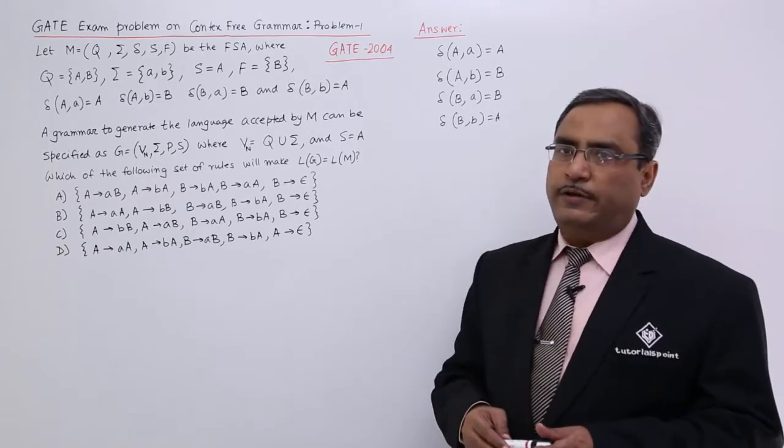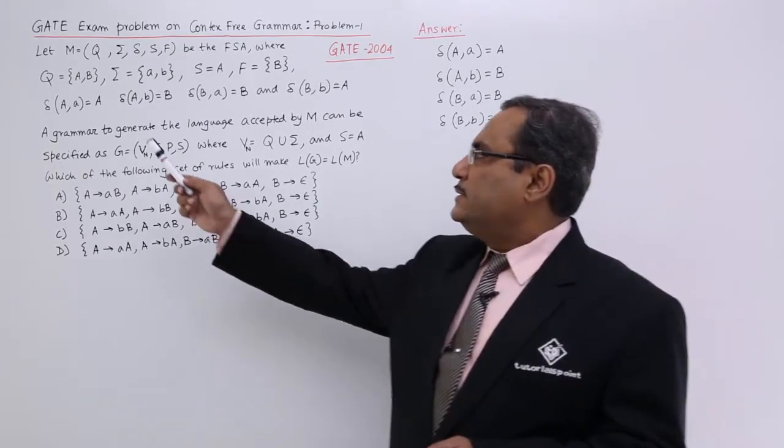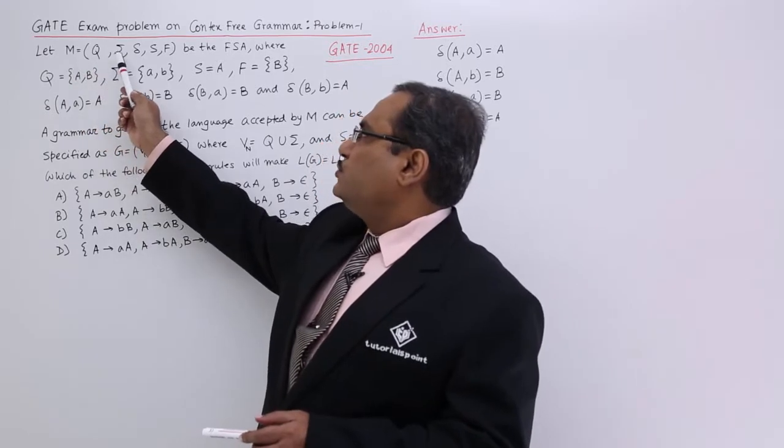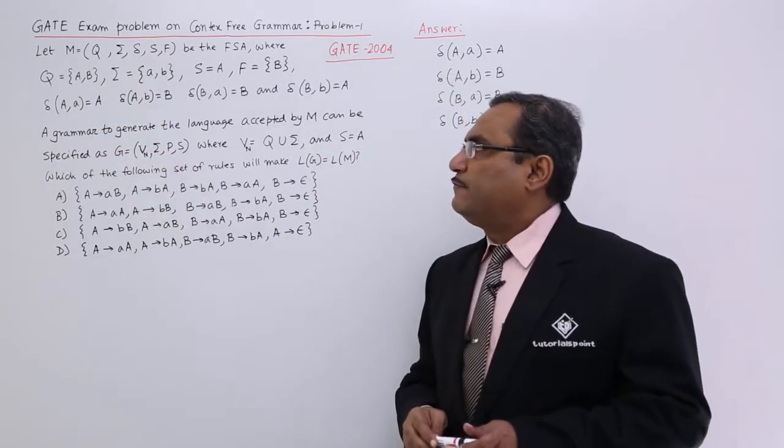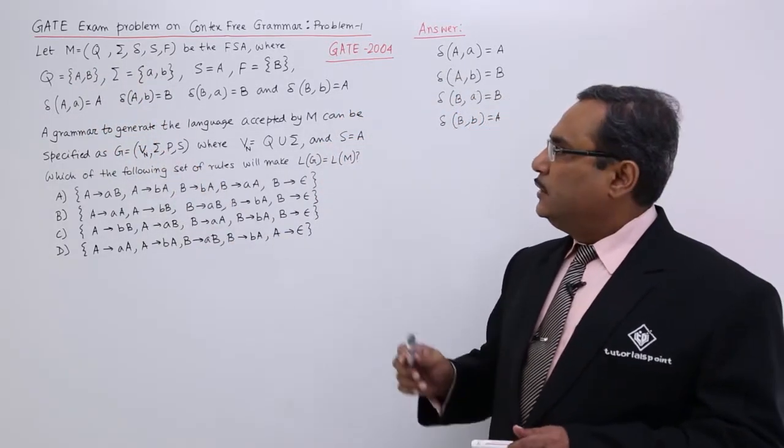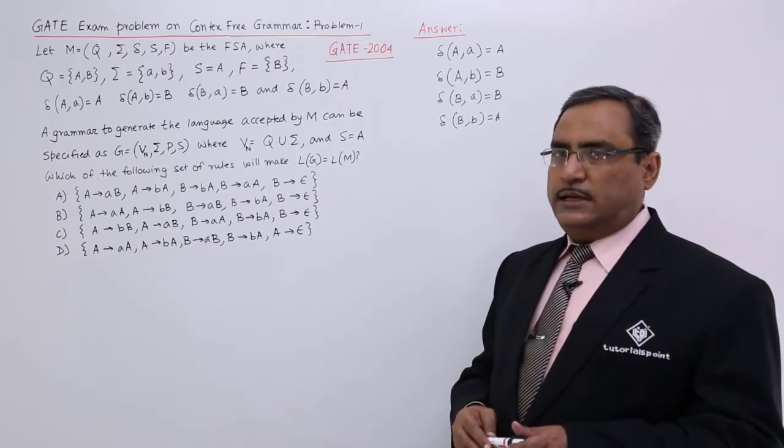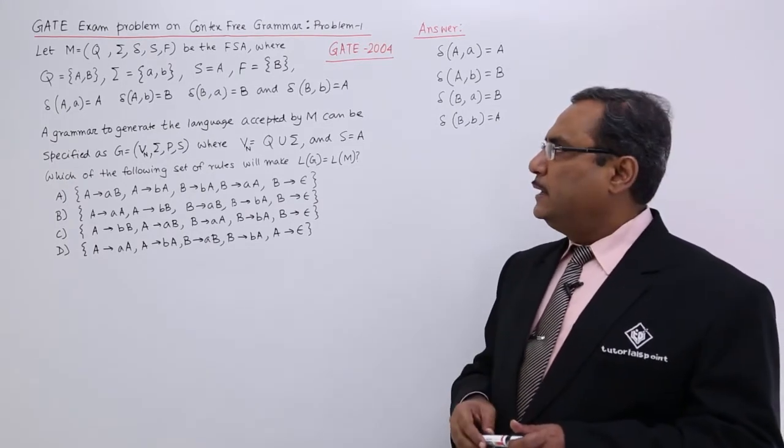One finite state automaton has been given. Name of the automaton is M and Q, sigma, delta, S and F are the 5 tuples. Q is a set of states and they are nothing but A and B, capital A B.